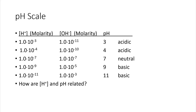In row three, the hydrogen ion concentration is equal to 1.0 × 10⁻⁷, the hydroxide ion concentration is equal to 1.0 × 10⁻⁷, the pH is 7, and the solution is neutral.